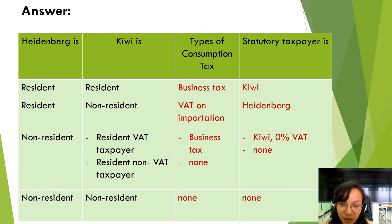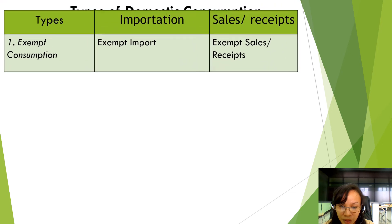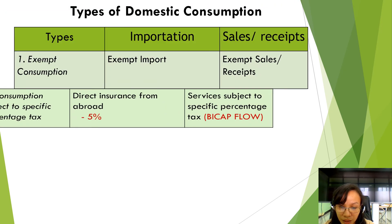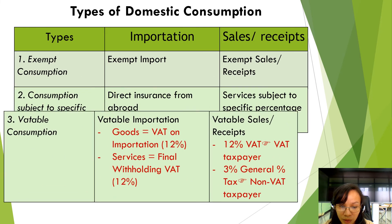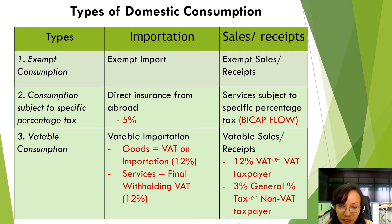You can copy the following illustration for review purposes. For importation, it can be either exempt import, import subject to a specific tax, and taxable importation. In sales and receipts, it can be either exempt sales or receipts, services subject to a specific percentage tax to be tackled under percentage tax, and taxable sales or receipts.